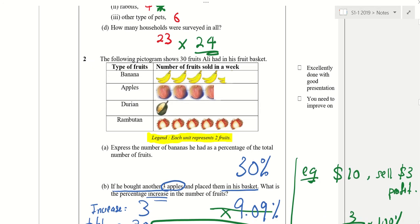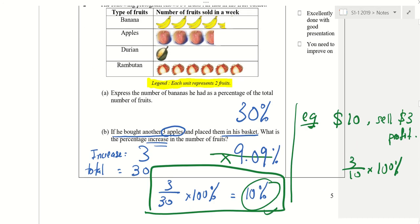For question two, check that all these are the answers. Take note: for B, the answer is 10% and not 9.09.